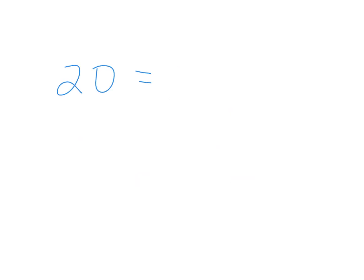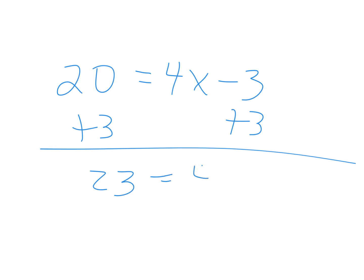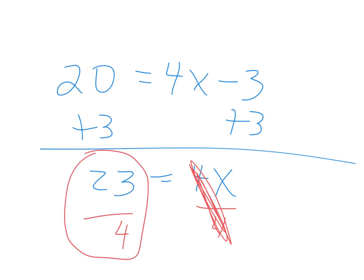Sometimes it freaks people out when the numbers are on the other side. You just need to be reminded you want to get the x alone — you're trying to get rid of the 4 and the 3. Remington, what's step number 1 here? Plus 3, plus 3. And then I got 23 equals 4x. A lot of people are so used to everything being on the left — they're like, 'Divide by 23.' No. Divide by 4. Think reflexively. 23 fourths is just fine — you don't have to make that into a mixed number.